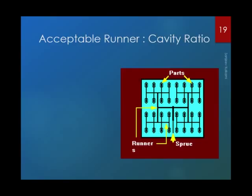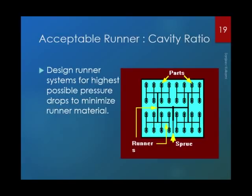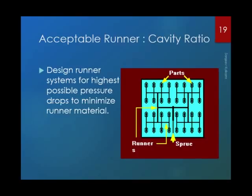The last principle: acceptable runner to cavity ratio. In multi-cavity molds — 16, 32, or 64 cavity — making small components, the weight of the feed system can exceed the weight of the products. In such cases, design the runner system for the highest possible pressure drop to minimize the runner volume. As a thumb rule, you can afford 25% pressure drop in the runner system and 75% in the cavity for normal component sizes. However, for 64 or 32 cavity molds with small components, you can afford a higher pressure drop in the runner system. This principle is best suited for multi-cavity molds.